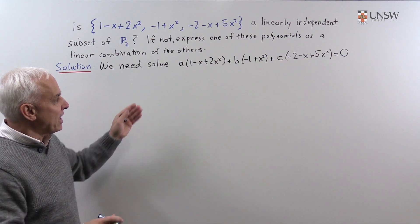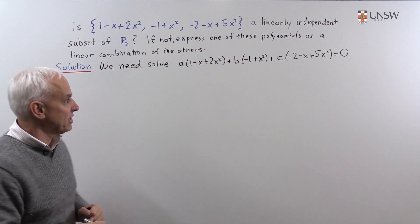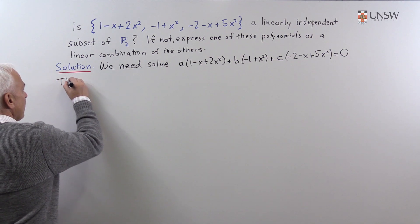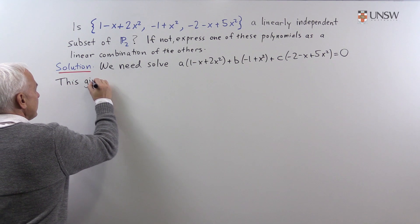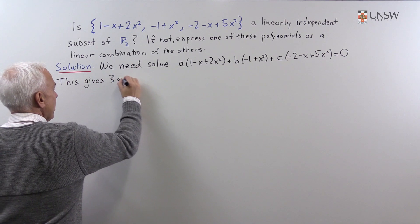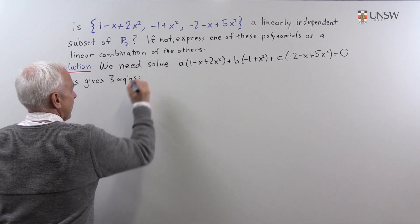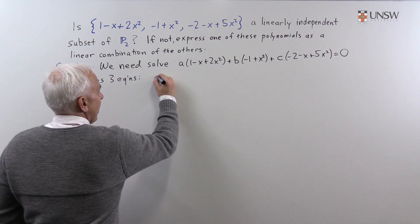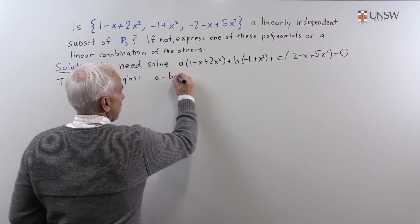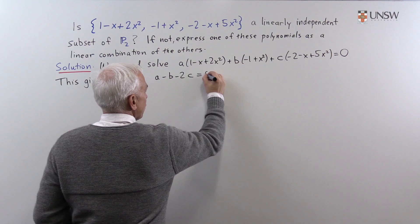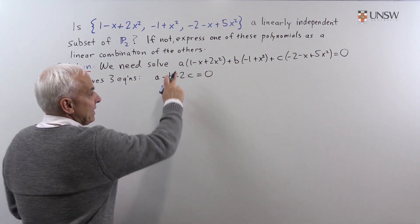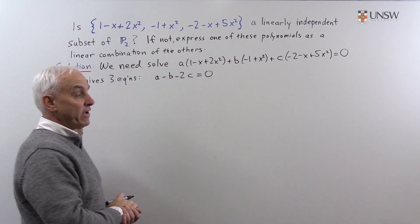So there's actually three equations here. This gives three equations, namely the constant term is a - b - 2c, that should equal 0. The linear term, all the powers of x,